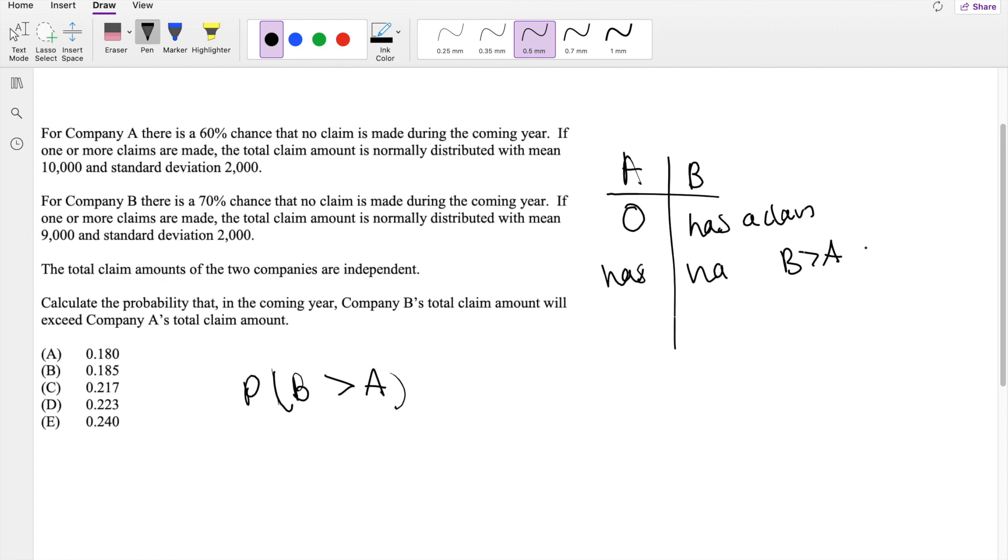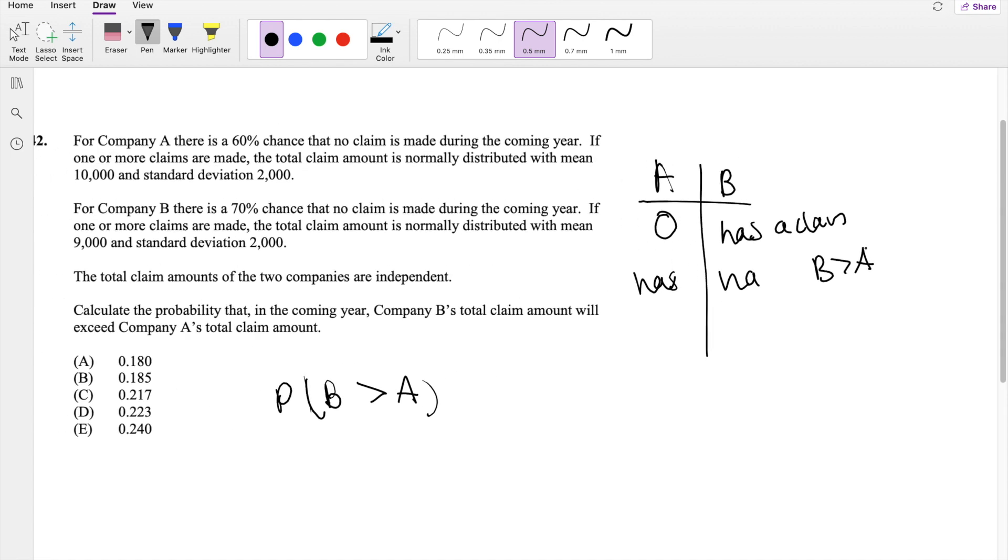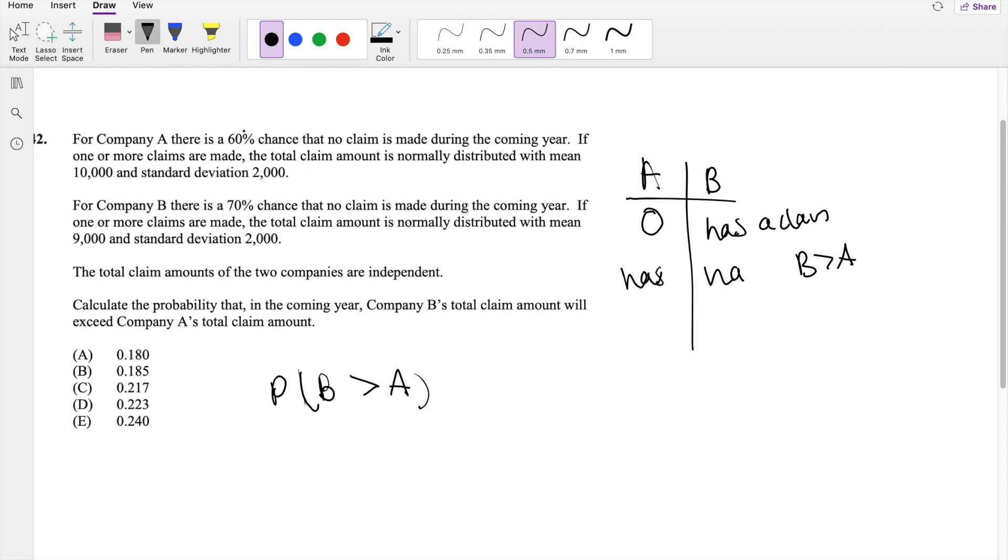So the first scenario is kind of easy. What is the probability that A has no claim? Well, if they have 60% chance that they have no claim, so that's going to be 0.6. And then what is the probability that B has a claim? They have 70% chance that they have no claim, so they must have 30% that they have a claim. So this is equal to 0.18.